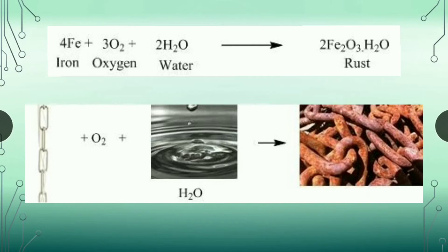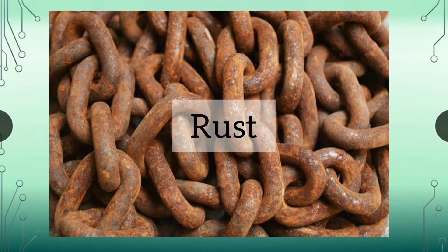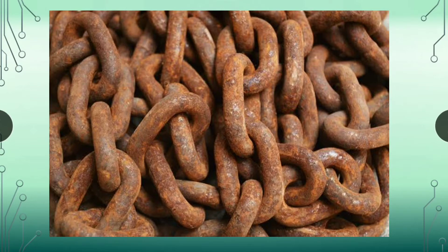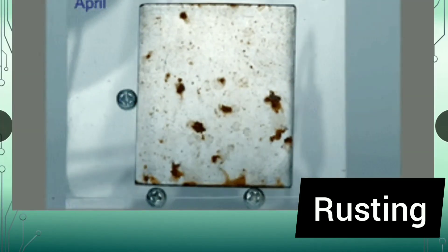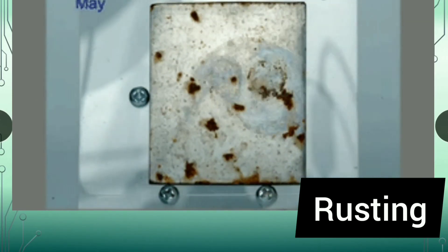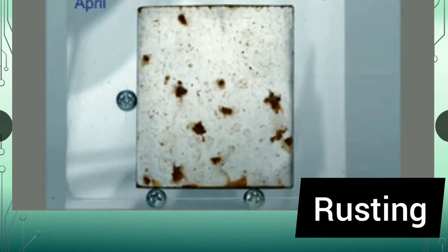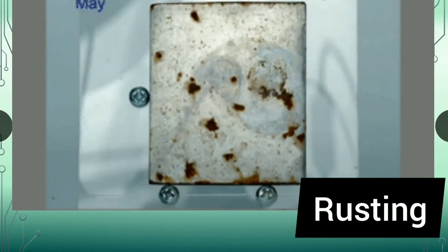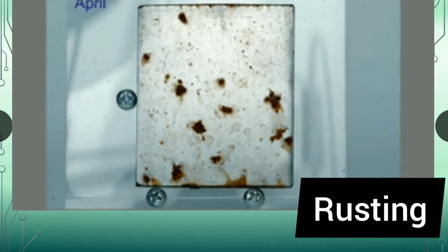Iron reacts with oxygen in the presence of moisture to form a reddish-brown flaky substance called rust. Iron reacts with oxygen in the presence of moisture to form rust, or iron oxide. Rusting is not good for metals because it makes the metal weak over time. This process is also called corrosion — the slow process in which atmospheric gases react with metals and eat away the metal, making it weak.